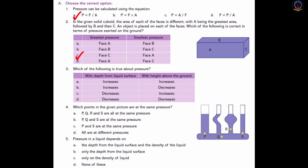Number 3: Which of the following is true about pressure? Option A: increases with depth from liquid surface, increases with height above the ground. Option B: increases, decreases. Option C: decreases, increases. Option D: decreases, decreases. The correct answer is Option B — pressure increases with depth from liquid surface and decreases with height above the ground.